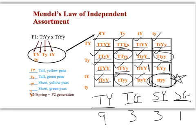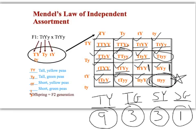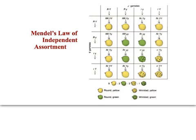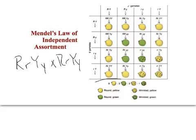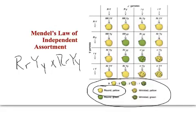So you can see: the two dominant phenotypes give us 9. One dominant and one recessive gives 3. One recessive and one dominant gives 3. And both recessive phenotypes give only 1 offspring. This very predictable 9 to 3 to 3 to 1 ratio appears whenever two heterozygotes are crossed in a dihybrid cross: 9 with both dominant phenotypes, 3 with dominant and recessive, 3 with recessive and dominant, and 1 with both recessive traits.